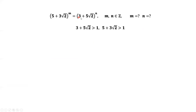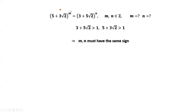The base 3 + 5√2 is bigger than 1, and the base 5 + 3√2 is also bigger than 1. This implies the powers m and n must have the same sign. Why? If one is positive and one is negative — say m is positive — then the left-hand side is bigger than 1, but if n is negative, the right-hand side is less than 1. That is impossible. So m and n must have the same sign, meaning both negative or both positive.